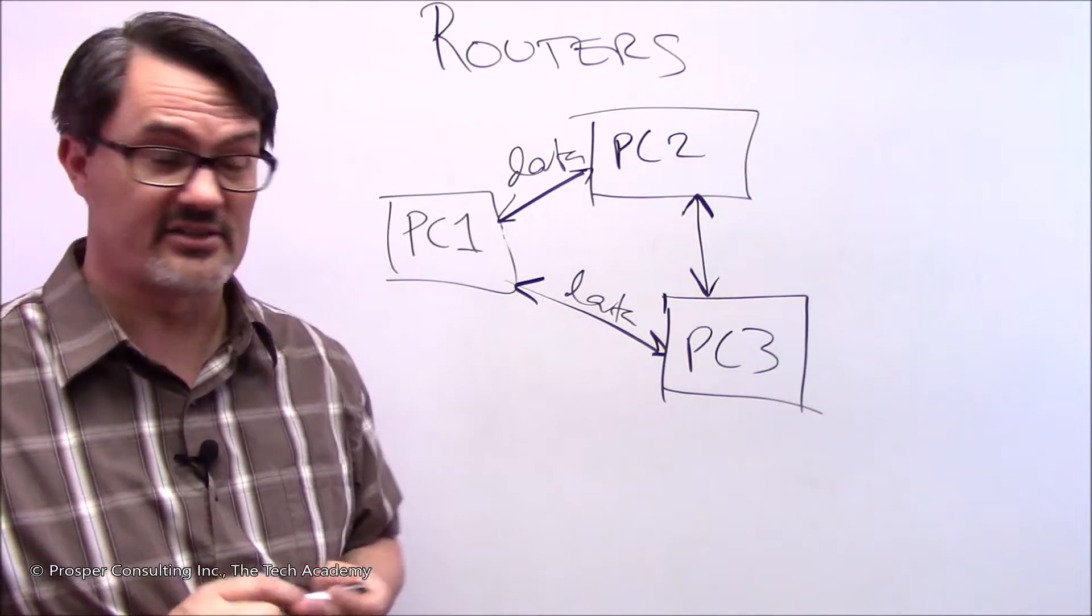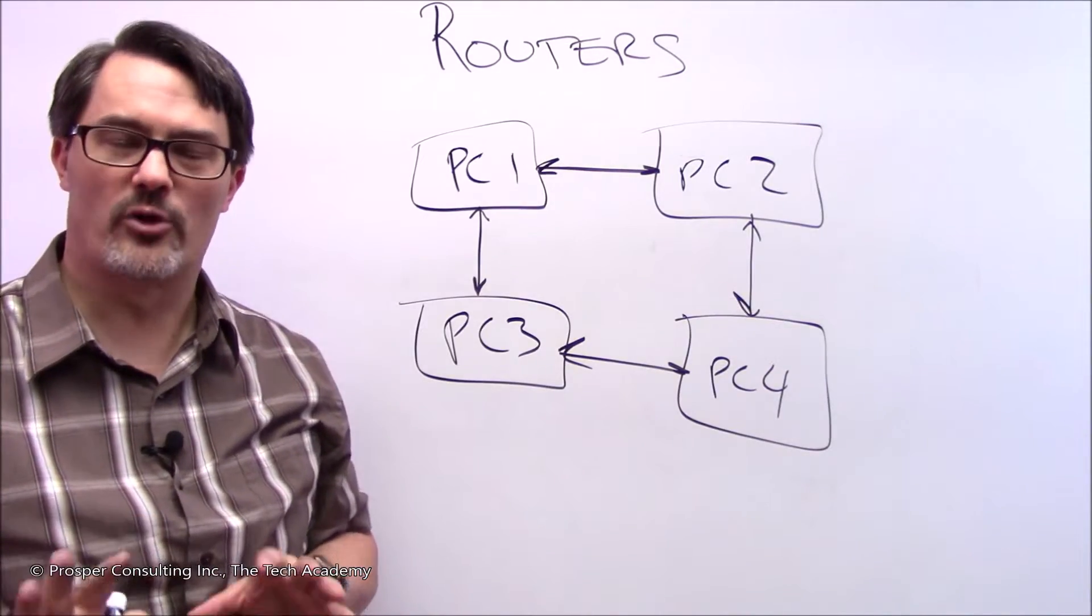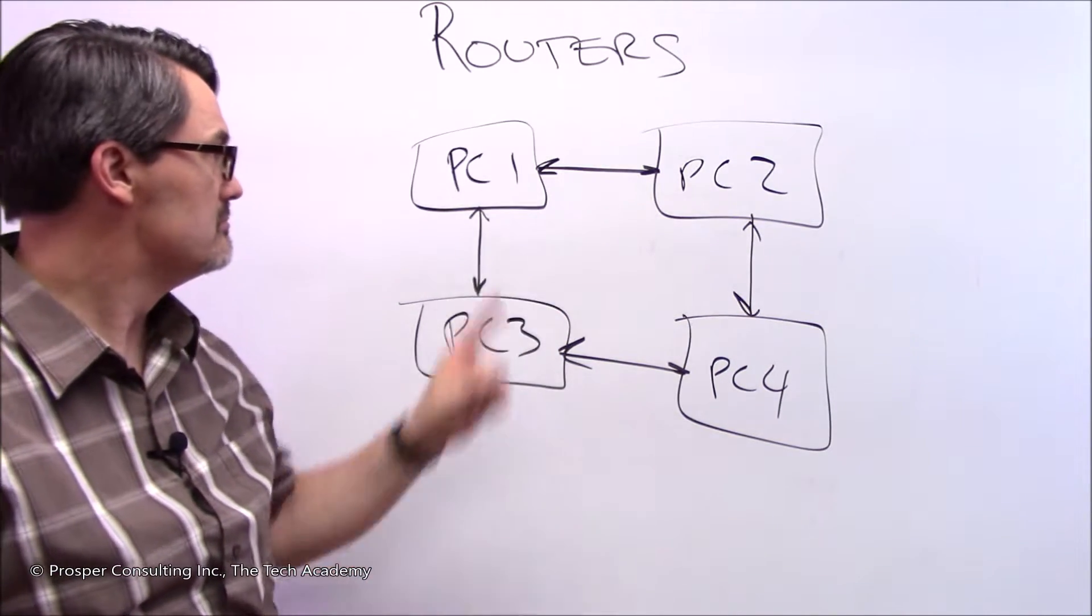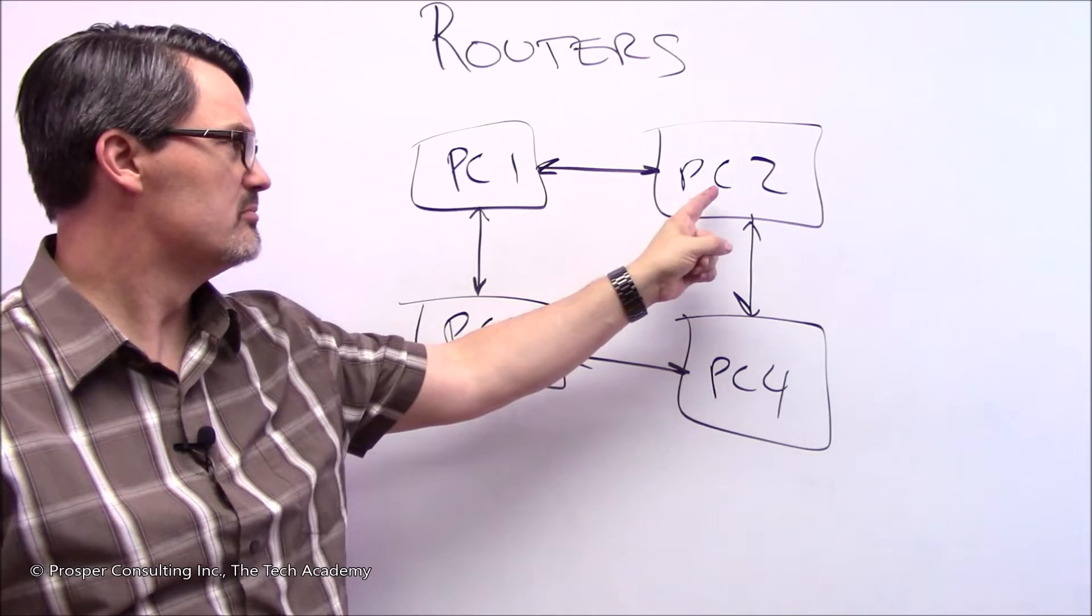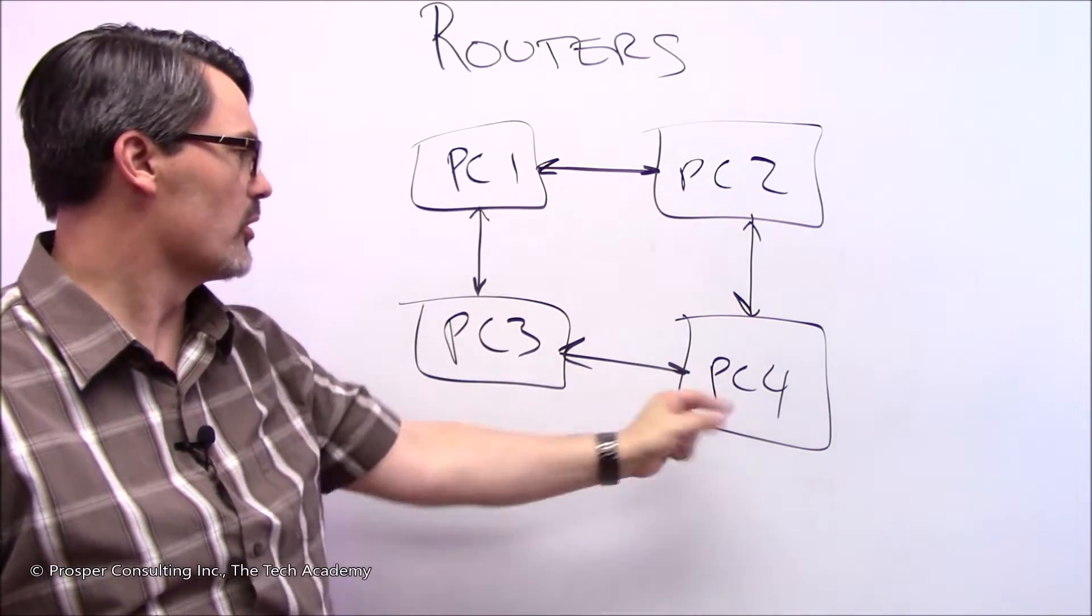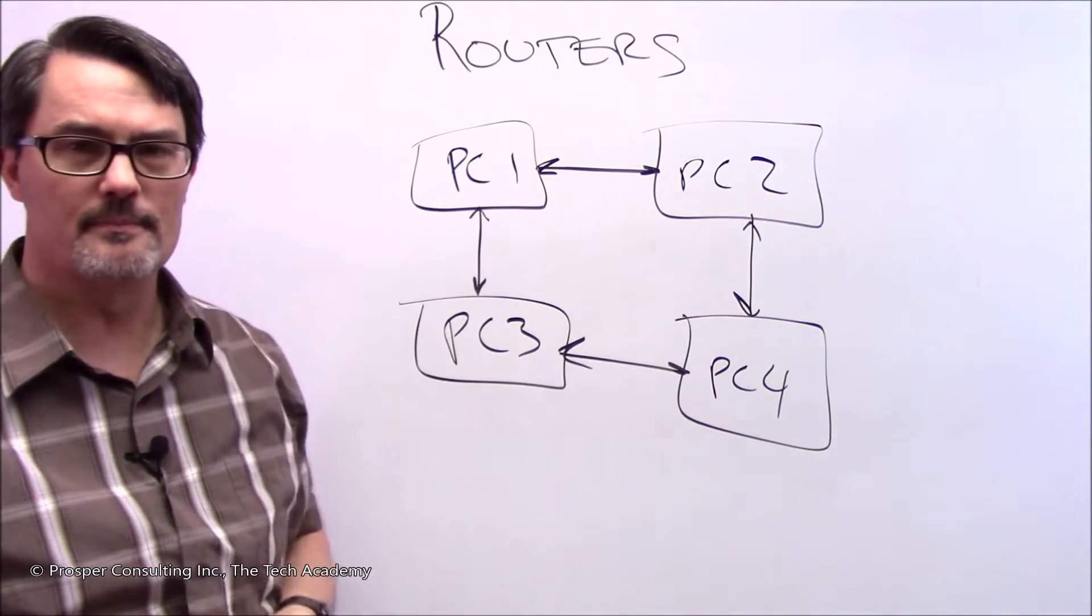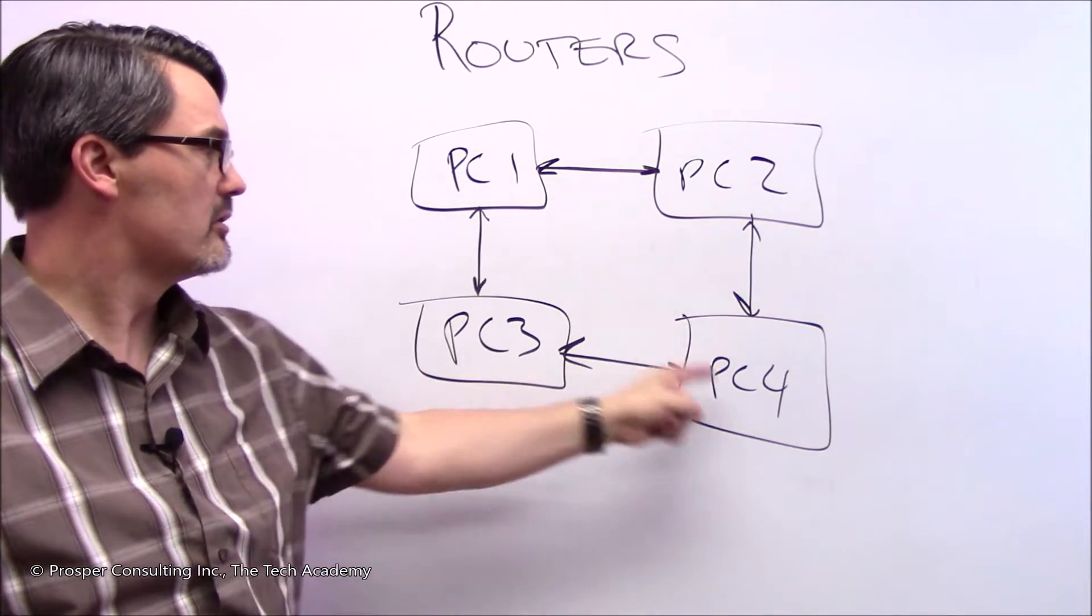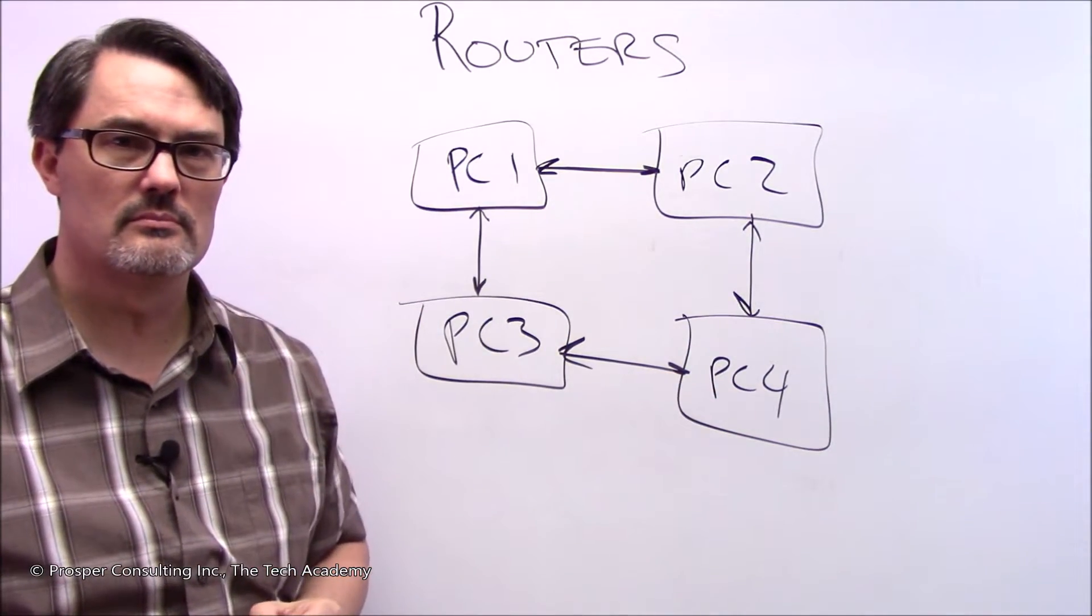Let's add a little bit more complexity. Here we have four computers. Seems pretty basic. We can transfer information from one to two, two to one, two to four, and back and forth. Here's the question: what if you want to send data from one to four? How do you do it?